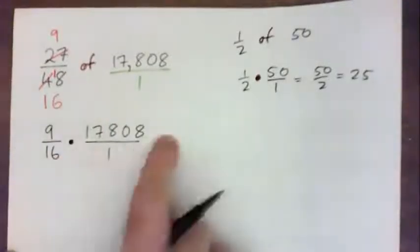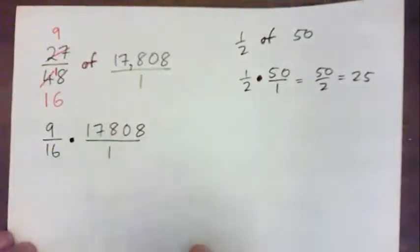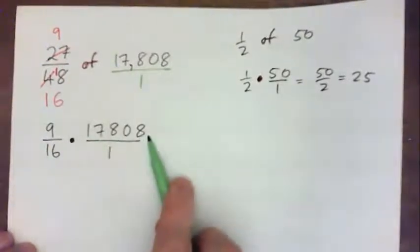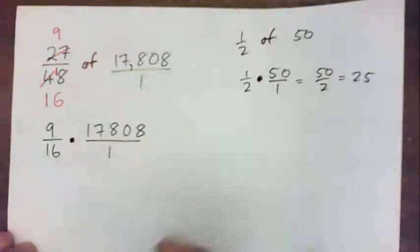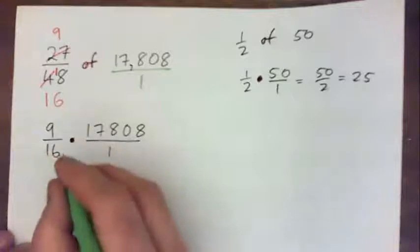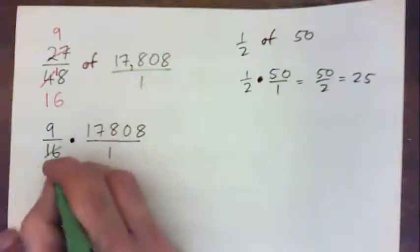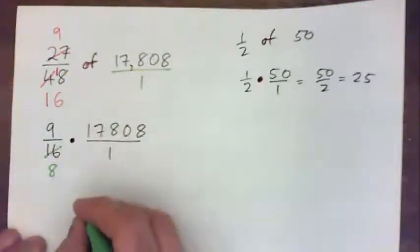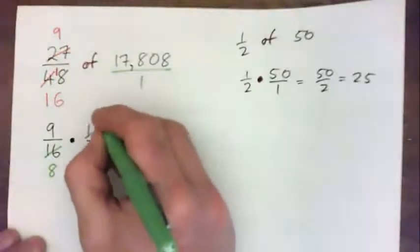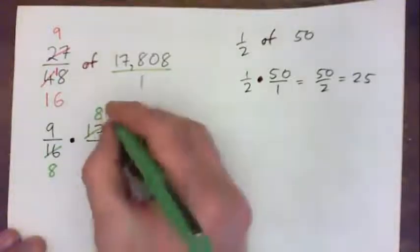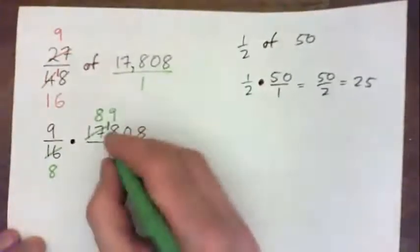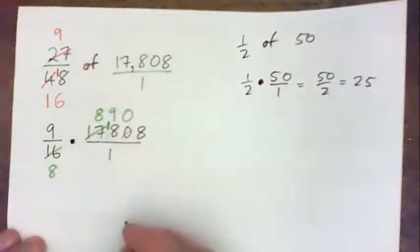So now we've got this times this and we can cross cancel. Now there's a 16 here and there's this number here. This number is even, and this number is even. So we can put a 2 into both. Right? You can write it down with me now. Anybody? 2 into 16 goes 8 times. 2 into 17 goes 8 times, remainder 1. 2 into 18, this becomes 9 times. Right? 2 into 0, 0 times. 2 into 8, 4 times. Okay?